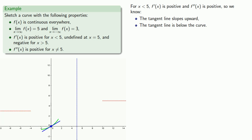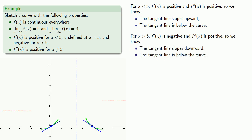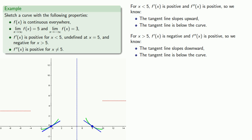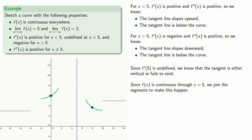For x greater than 5, f prime of x is negative and f double prime is positive. So the tangent line slopes downward and is below the curve, giving us a curve that looks something like this. Since f prime of 5 is undefined, the tangent line is either vertical or fails to exist. But since f of x is continuous through x equals 5, our curve joins across this line. We just have to make sure that when we join our segments together, we either get a vertical tangent or a tangent line that doesn't exist because the secant lines disagree.